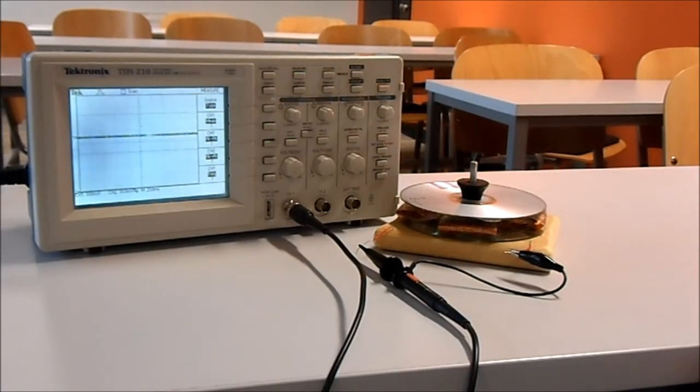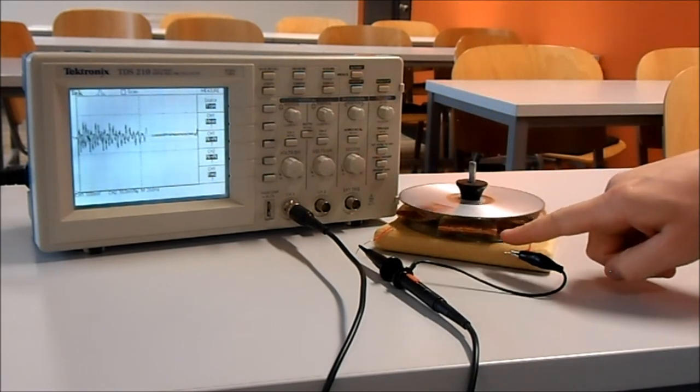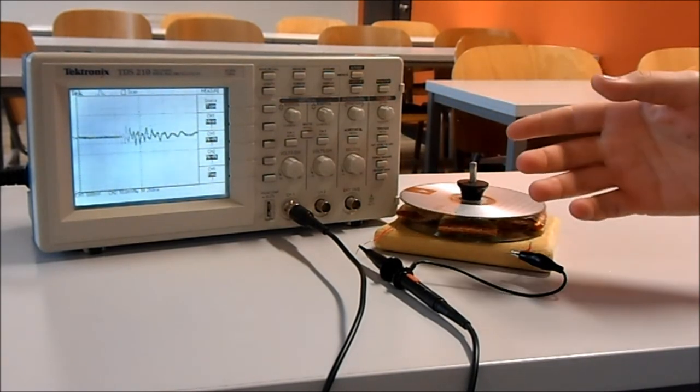Now that the CD generator is assembled we need to prove that it works. To prove that it works we have to spin the magnets over the coils. As the magnets spin over the coils this is what's making the electricity.